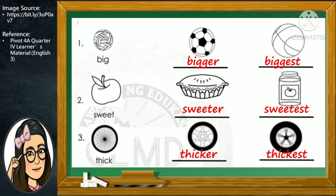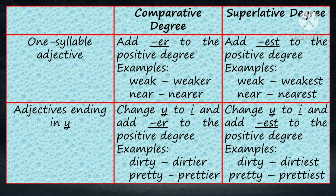Now let us discuss how we form the comparison of adjectives. For one-syllable adjectives, we add -er at the end of the base form of the adjective to form its comparative degree. For its superlative degree, we simply add -est at the end of the base form of the adjective.